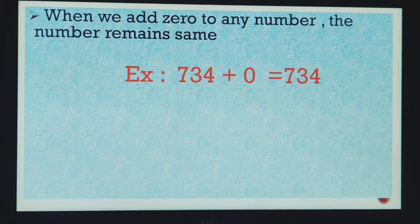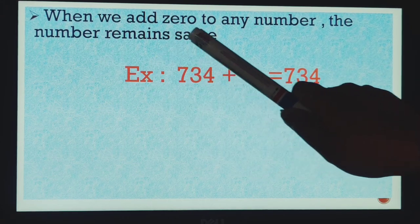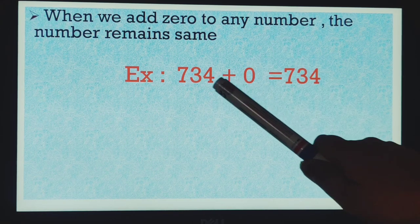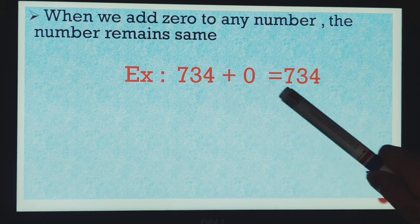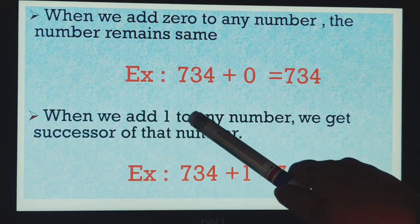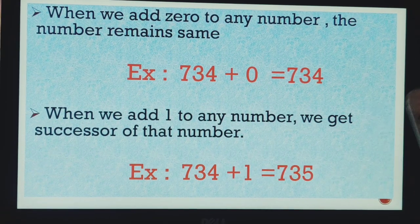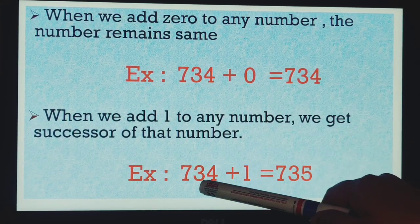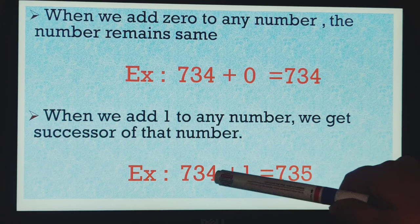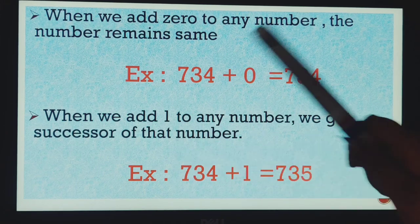Students, keep this thing in your mind. When we add zero to any number, the number remains same. Either that will be 1 digit or 2 digit, whenever we will add zero to any number, we will get that number itself. Like, when we add 1 to any number, we get successor of that particular number. In each and every digit, either that is 1 digit, 2 digit, or 3 digit here, if we will add 734 plus 1, we will get 735. So this is the successor of 734.